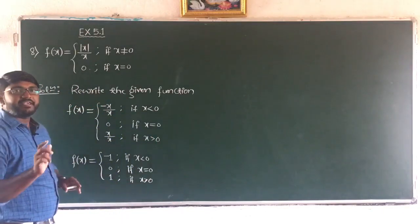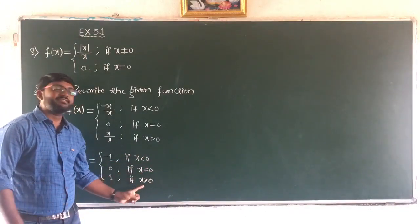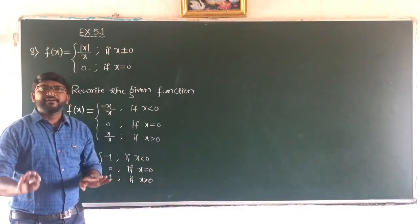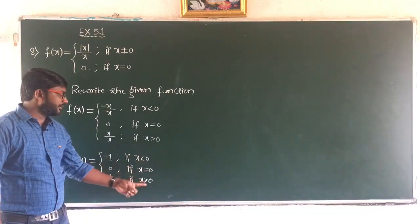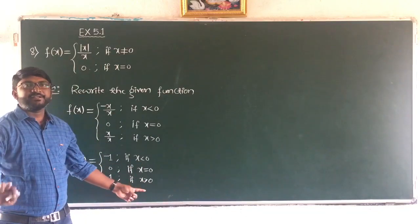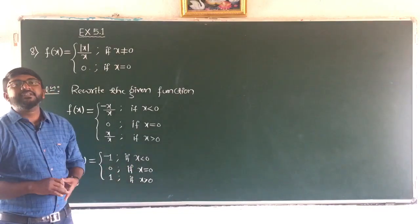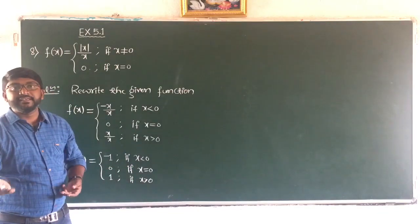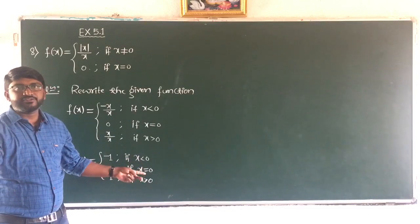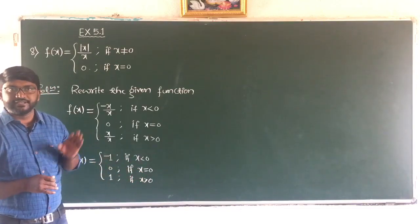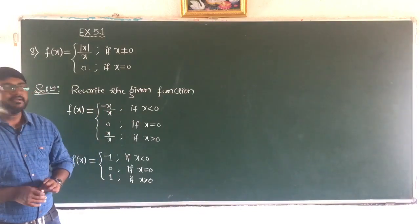Again we get three cases: c less than 0, c equal to 0, and c greater than 0. The function will be continuous for c less than 0 and c greater than 0. So we have to check the continuity at c equal to 0, because around 0 the function is changing, and we need to go for left hand limit as well as right hand limit.